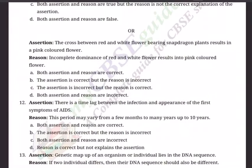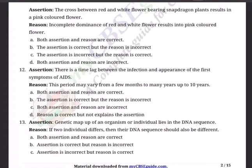Internal choice for Question 11 — Assertion: The cross between red and white flower-bearing snapdragon plants results in pink-colored flower, that is incomplete dominance. Reason: Incomplete dominance of red and white flower results in pink-colored flower. Options: A) Both A and R are correct. B) A is correct but R is incorrect. C) A is incorrect but R is correct. D) Both A and R are incorrect.